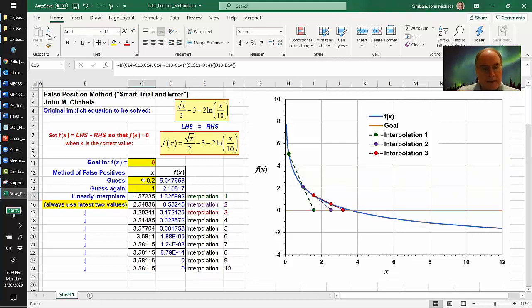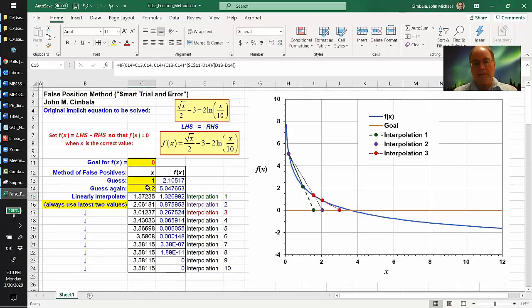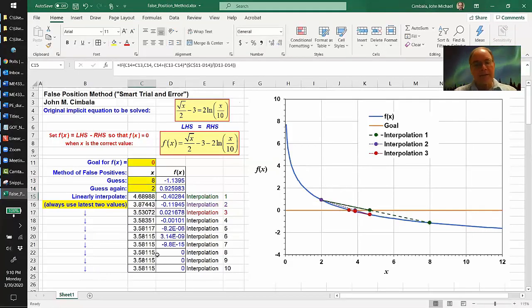I also want to show you that the order of these doesn't matter. These initial guesses, if I do a 0.1 and then a 0.2, I still get the same results. If I pick some different guesses, I should still get the same result as well. 0.3 and 5, I still get the same answer. And if I try something else, maybe 8 and 2, I still get the same answer.